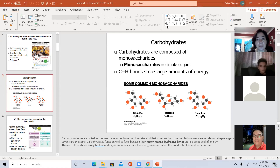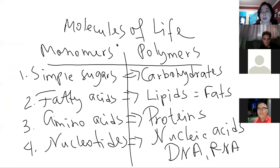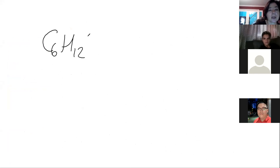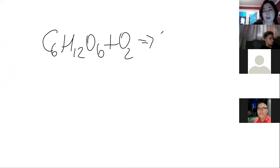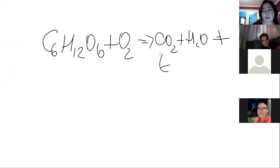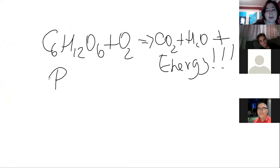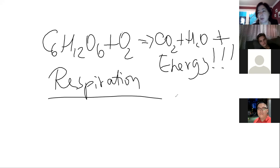Your digestive system and cells will primarily target glucose. The reason is this reaction: C6H12O6 plus oxygen gives you carbon dioxide and water. This is called cellular respiration — the most important reaction in your cells because it provides the energy for cells to function.